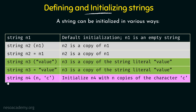Next we have something a little different: String n4 within parenthesis with an integer n, comma, and then a character within single quotes. This means initialize n4 with n copies of the character c. Any positive integer value followed by a character means that character will be stored that many times inside String n4. For example, if we say String n4(5, 'c'), then c will be contained 5 times in n4, so printing n4 would print c c c c c.